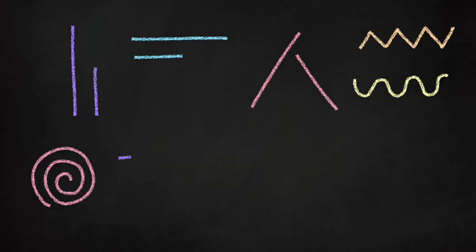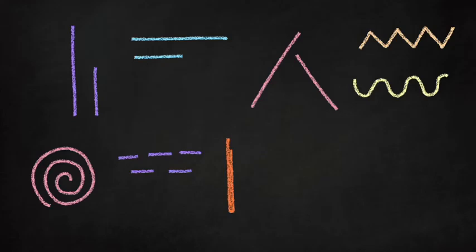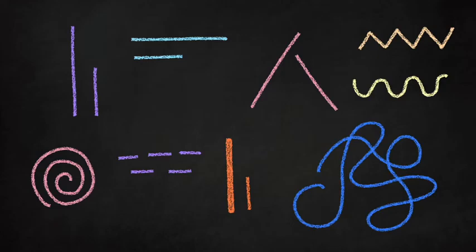What are the different type of lines? There are vertical, horizontal, diagonal, zigzag, wavy, spiral, broken, thick and thin lines, continuous, curve, angular and so on.